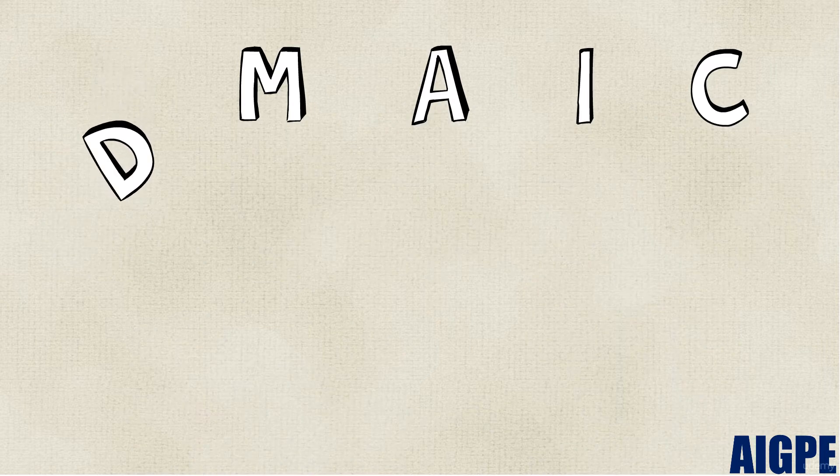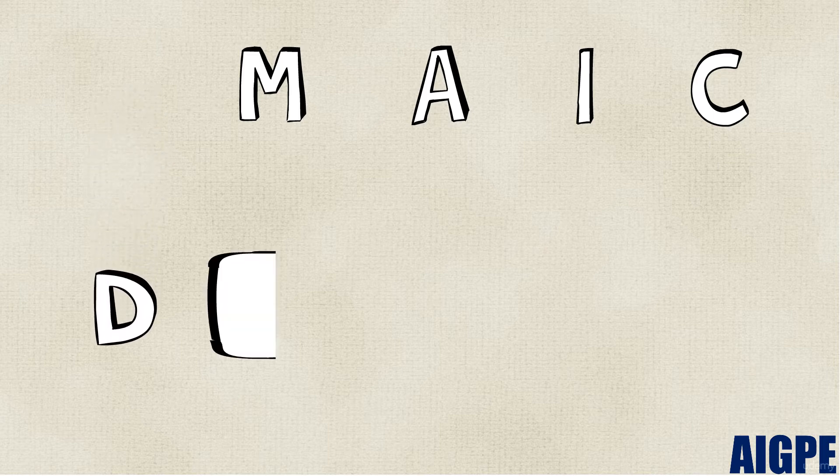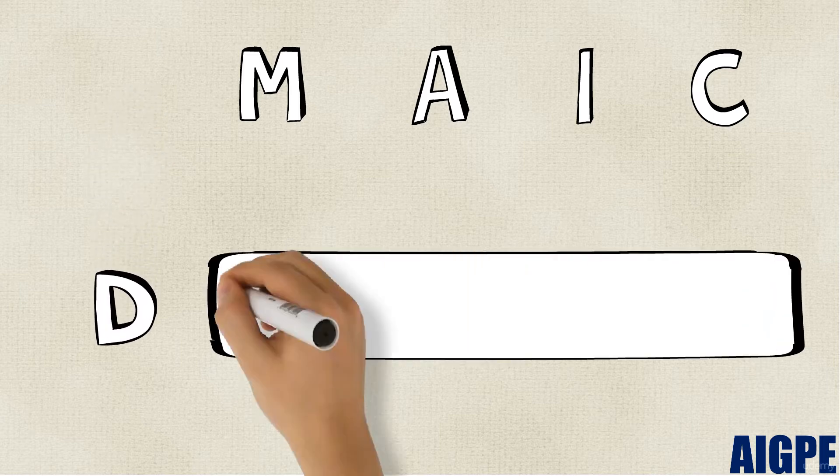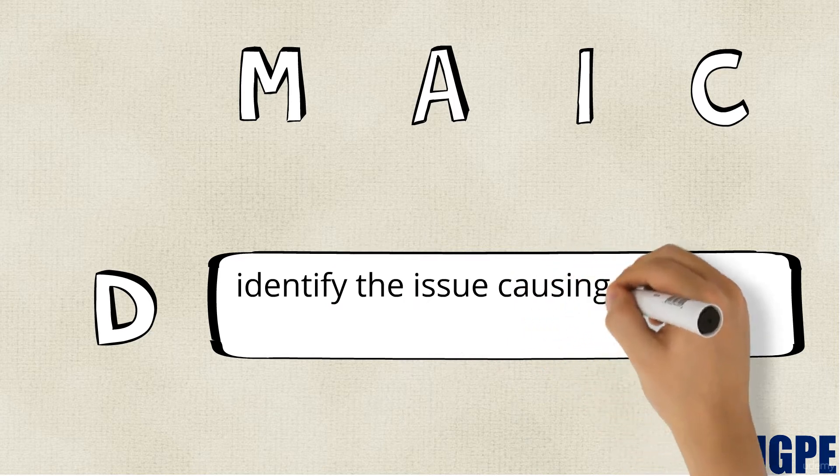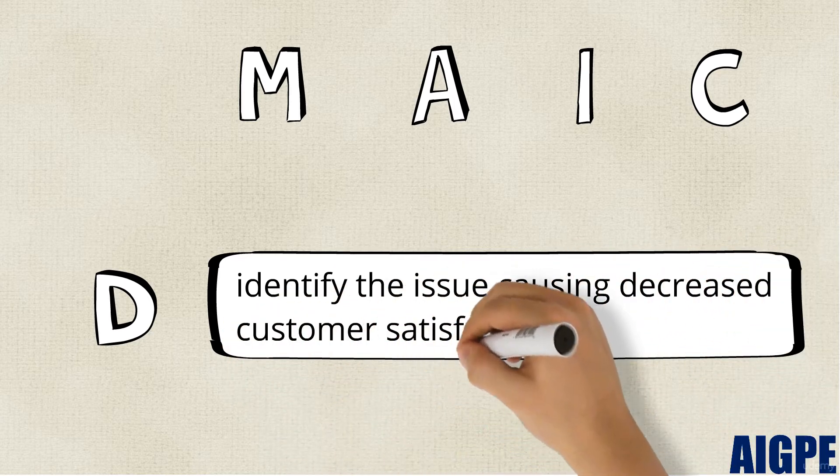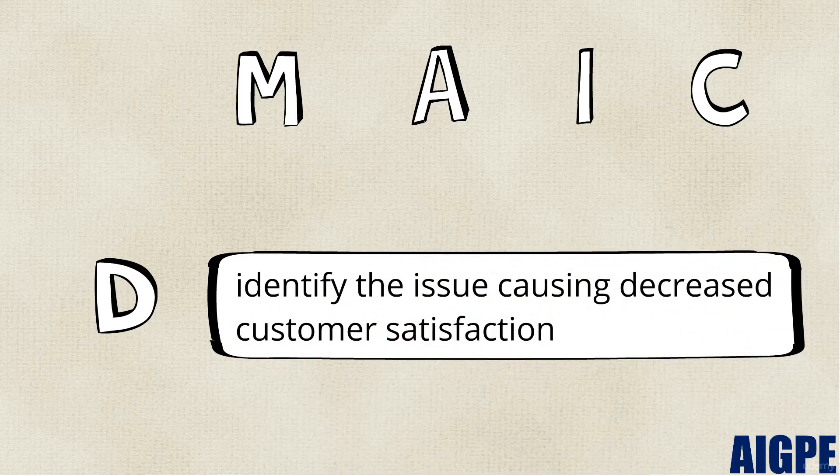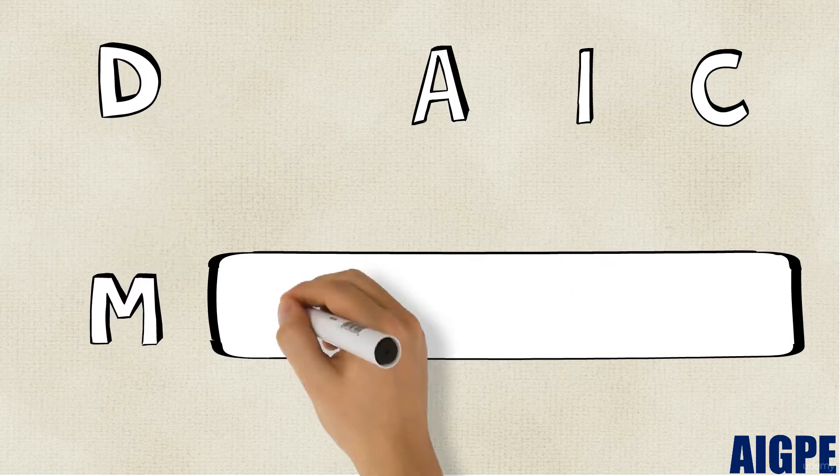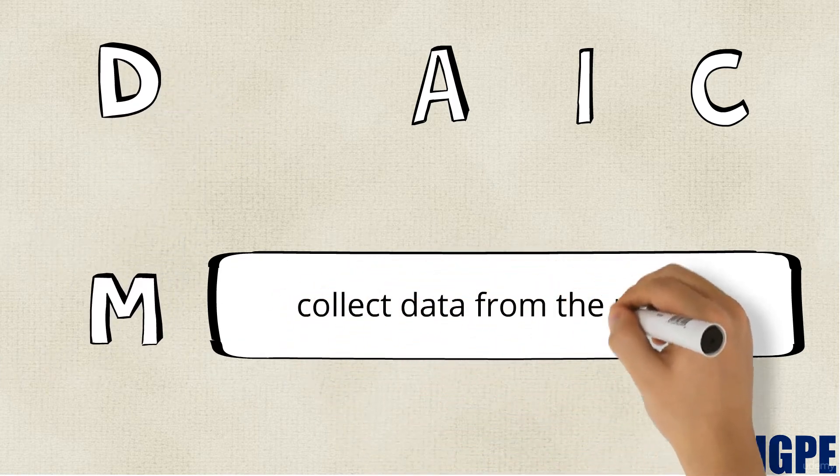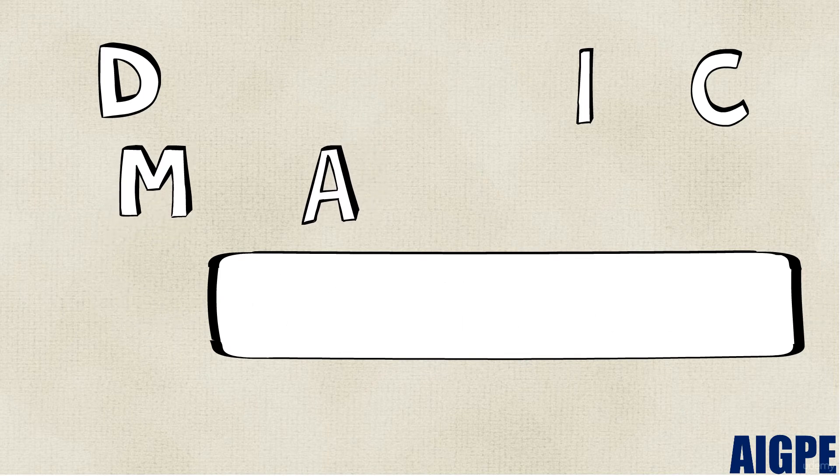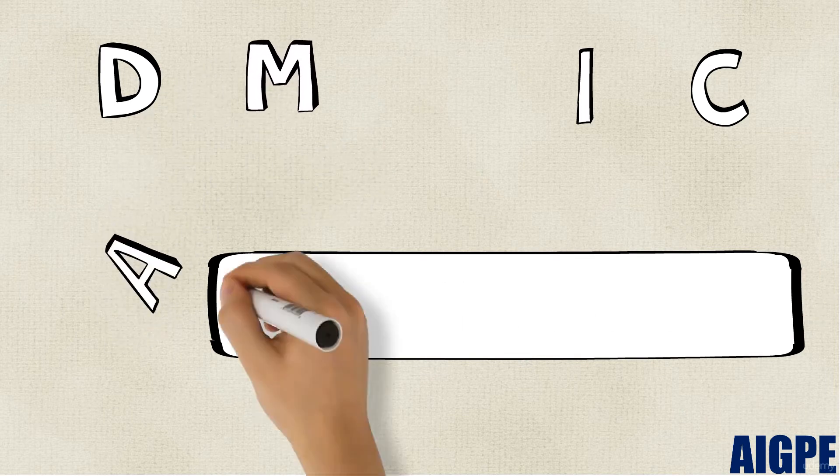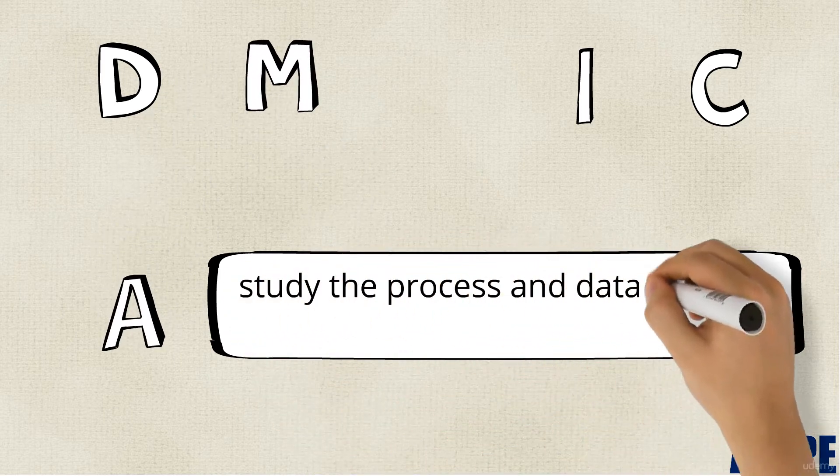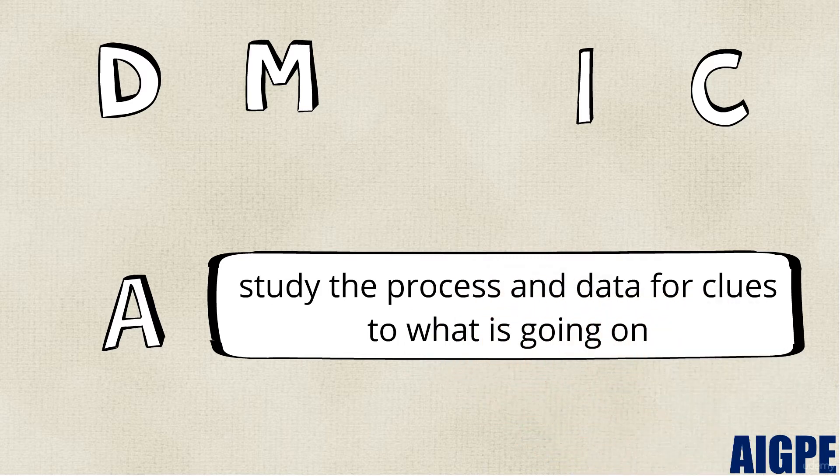Basically, you will do the following in each step. Define: identify the issue causing decreased customer satisfaction. Measure: collect data from the process. Analyze: study the process and data for clues to what is going on.